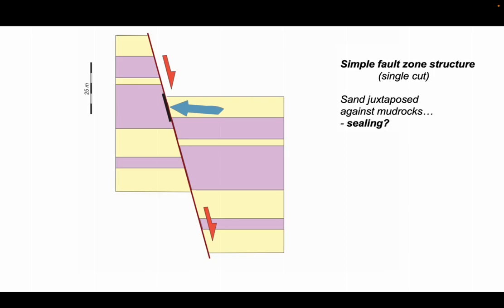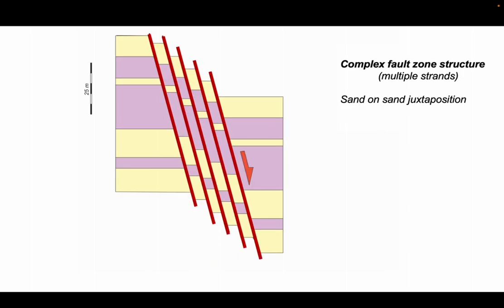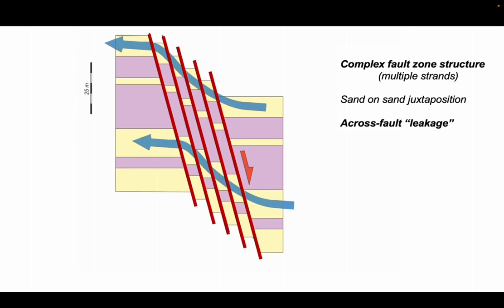So moving away from this simple illustration, the fault zone could be like this, in which case there's lots of sand-on-sand juxtaposition connecting through, increasing the chance of cross-fault leakage and communication from one side to the other.